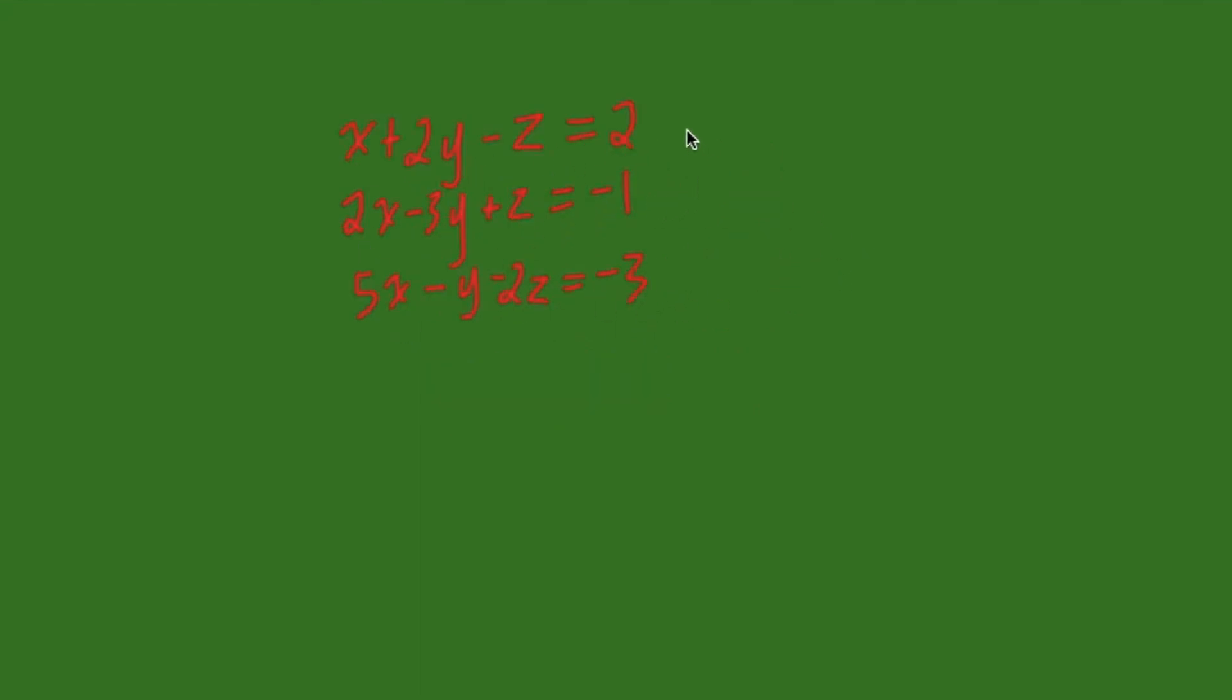So, if we take these top two, we can see that adding equation one to equation two will eliminate our z. As if we add these together, negative z plus positive z is zero. So, z will be eliminated.